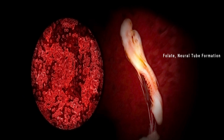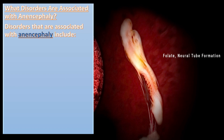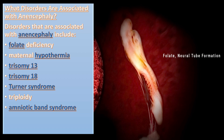What disorders are associated with anencephaly? The disorders associated with anencephaly include folate deficiency, maternal hyperthermia, trisomy 13–18, isoternal syndrome, triploidy, amniotic band syndrome, limb or body wall defects, and Walker-Warburg syndrome.